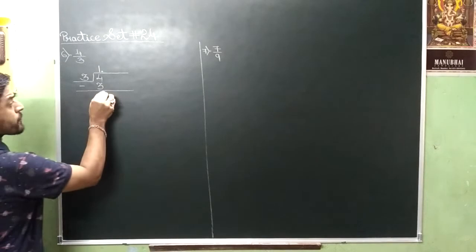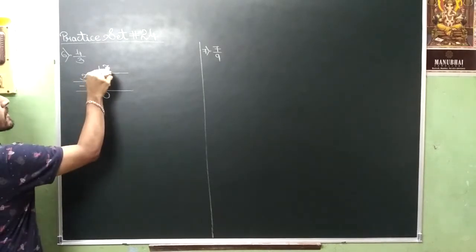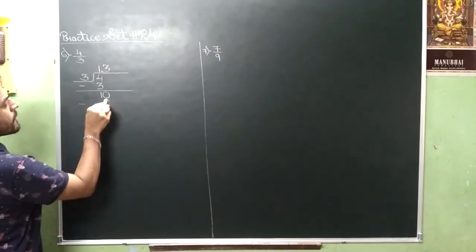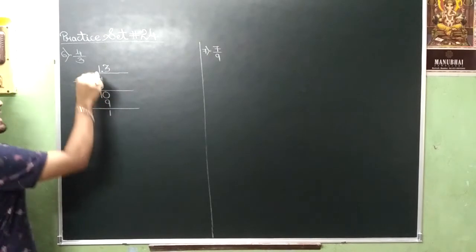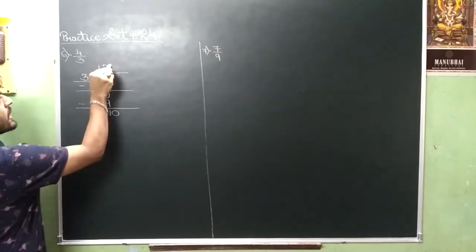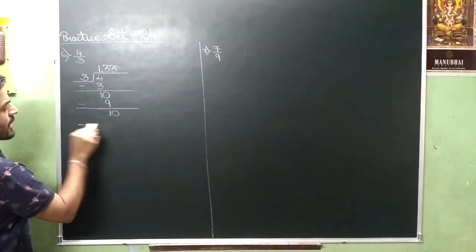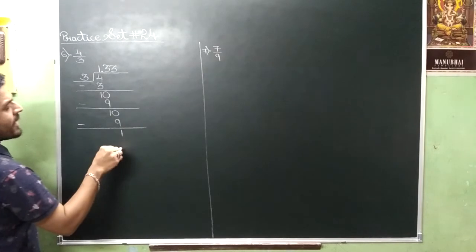Sir take zero. Three, three's are nine. Remainder will be one. Decimal point apply kar diya hain. Take a zero. Three, three's are nine. Remainder will be one.